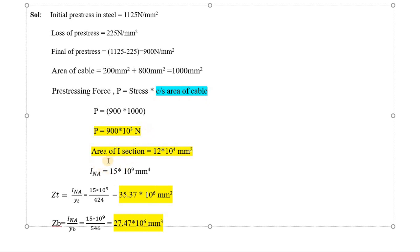Next is area of I-section — I have directly copied from the question itself. That is 12 into 10 power 4 mm square. Next is INA, that is the moment of inertia for the neutral axis. This is also given — that is 15 into 10 power 9 mm power 4.